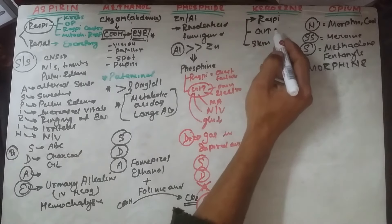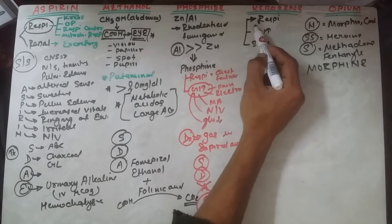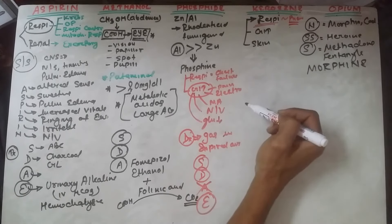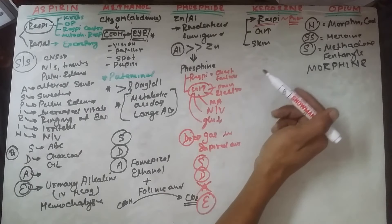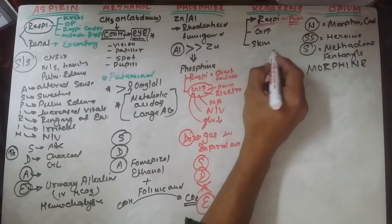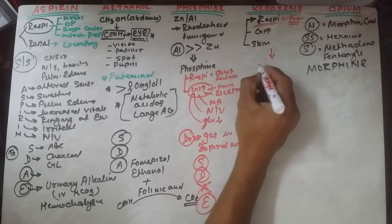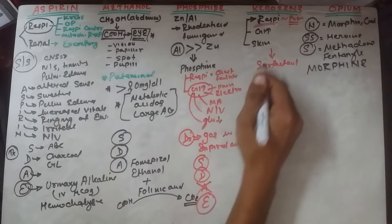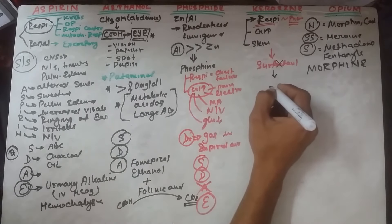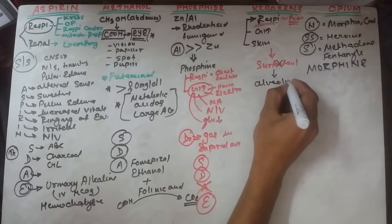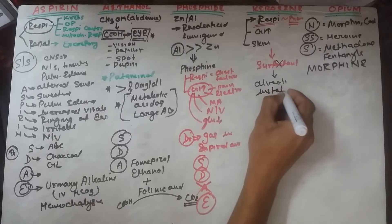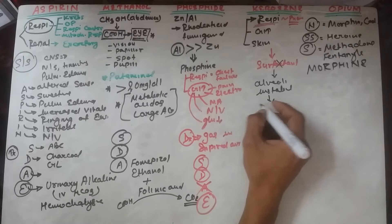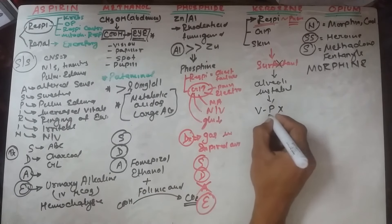Kerosene primarily causes respiratory symptoms equivalent to pneumonia — specifically chemical pneumonitis. When kerosene is introduced into the lungs, it inhibits surfactant. When surfactant is inhibited, alveolar stability is lost, leading to closure of distal airways and ventilation-perfusion mismatch, resulting in hypoxemia.